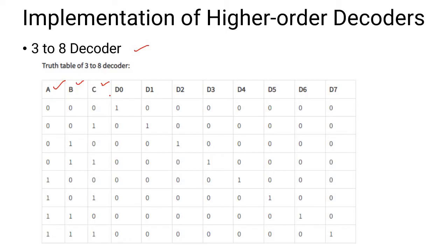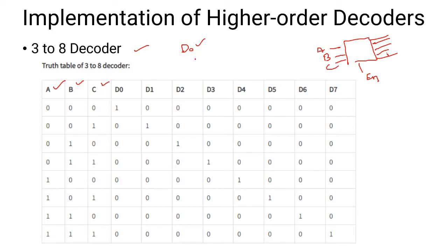The 3-to-8 decoder has 3 inputs and 1 enable line, giving 8 outputs. The 3 inputs are A, B, and C. The 8 outputs are D0 through D7, corresponding to the binary combinations 000 through 111.